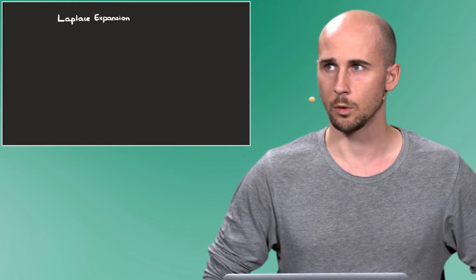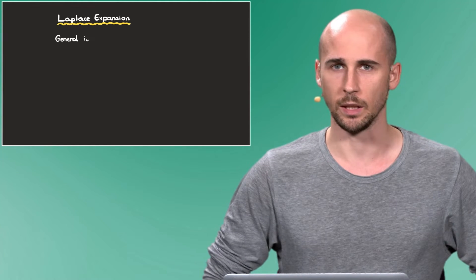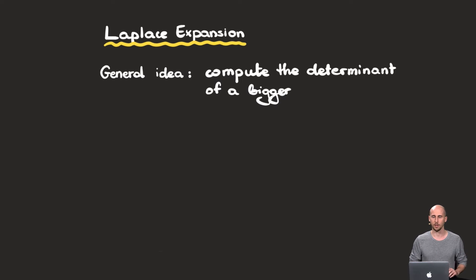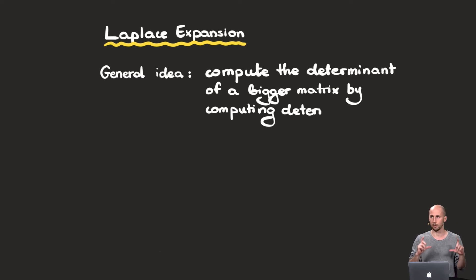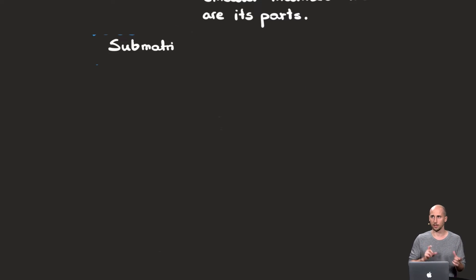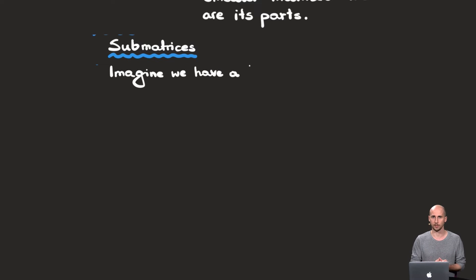The general idea of Laplace expansion is that we use determinants of smaller matrices inside our bigger matrix to compute the determinant of that bigger matrix. We have a big matrix, we want to compute its determinant, and we use parts of it — the determinants of these smaller parts. These smaller parts are called sub-matrices, and to obtain a sub-matrix you simply delete a row or a column.